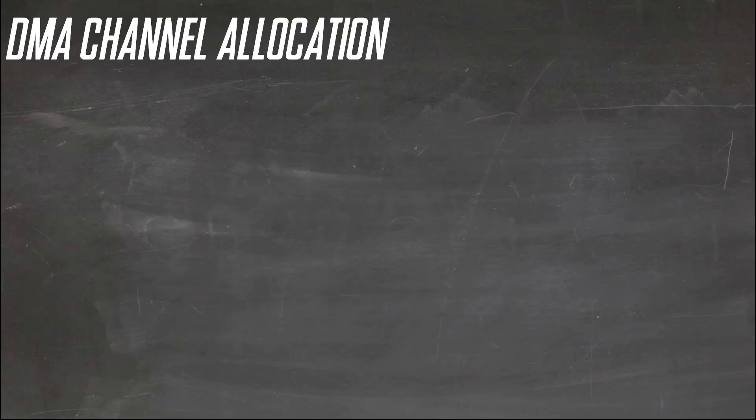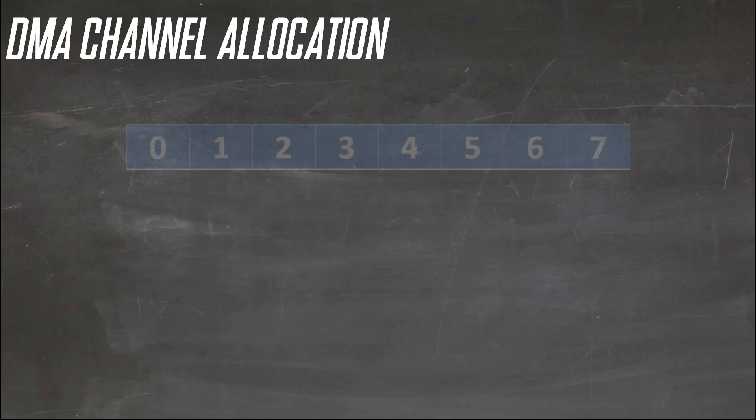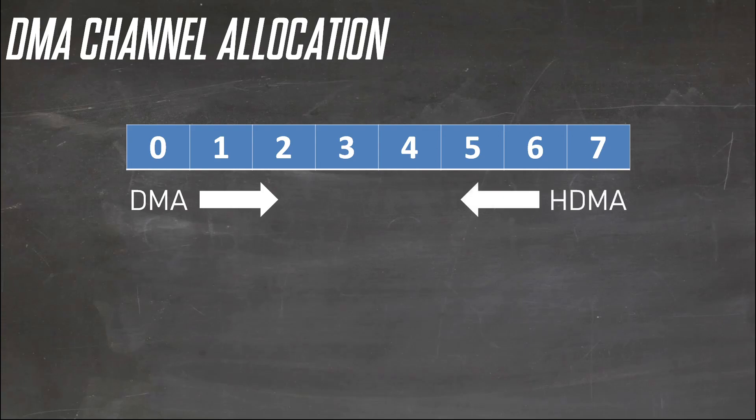Which segues nicely into DMA and HDMA allocation. The common format is normal DMAs up from 0, and then allocate HDMA down from 7. But you can do it the other way — it doesn't matter.